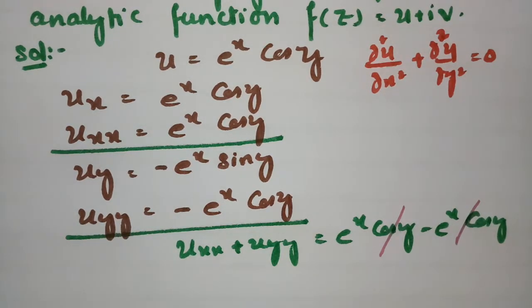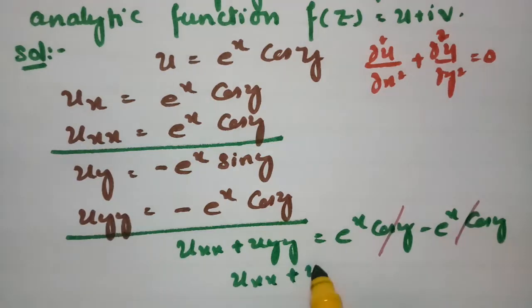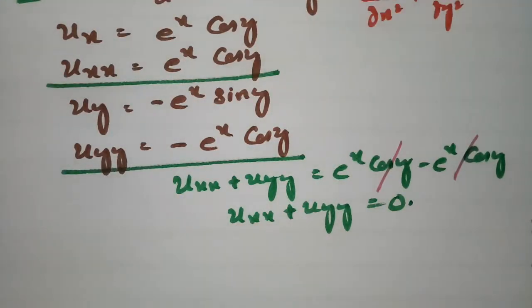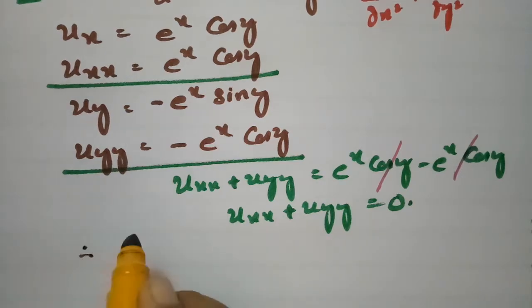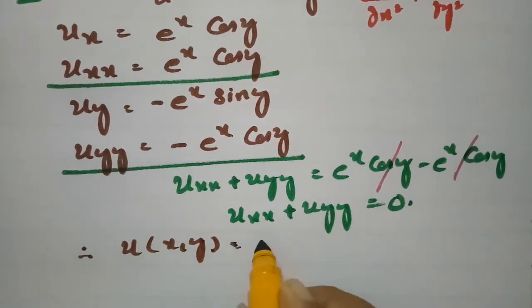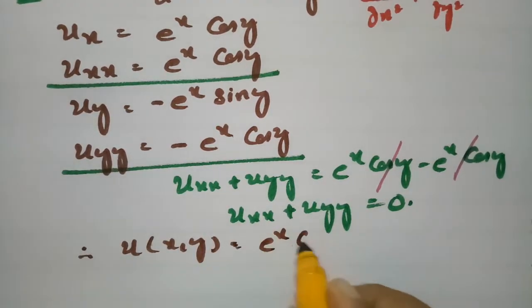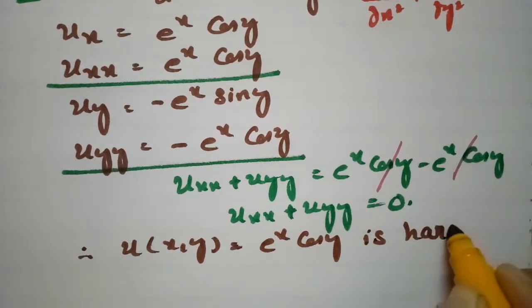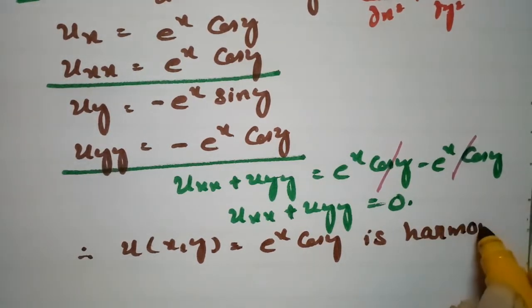The value obtained is 0, so it satisfies the Laplacian equation. Therefore u(x, y) = eˣ cos(y) is harmonic.